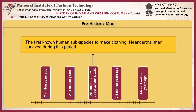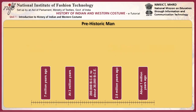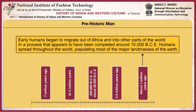The first known human subspecies to make clothing, the Neanderthal man, survived during this period. It appears that these proto-humans, as early humans are known, began to use crude tools. Early humans began to migrate out of Africa and into other parts of the world, in a process that appears to have been completed around 10,000 BCE, as humans spread throughout the world, populating most of the major landmasses of the earth.